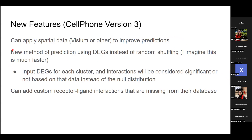Version three also has a new optional method: prediction using differentially expressed genes instead of random shuffling. You input differentially expressed genes that you define or calculate yourself, and then interactions will be considered significant based on whether one of the receptors or ligands is a differentially expressed gene — instead of the random shuffling and null distribution approach. This is a potentially much faster way to calculate significance. Also in version three, you can add receptor-ligand interactions missing from their database.